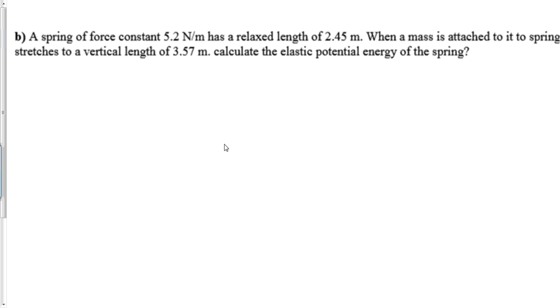Problem B, right off the bat, I see the word spring in problem B. So I'm going to write PE-S equals 1 half K-X square. I'm going to read the question now. I see this: 5.2 Newton meter. And I even see the word constant there. This is that K. It's very identifiable.